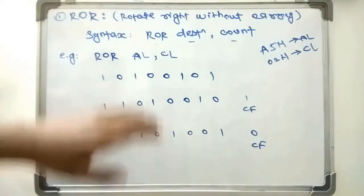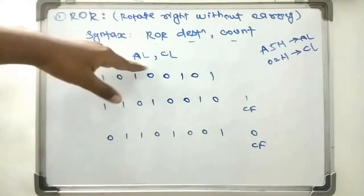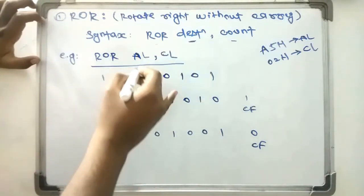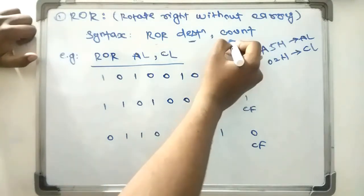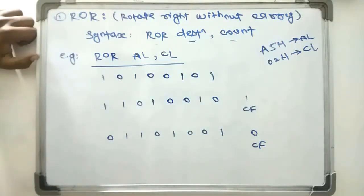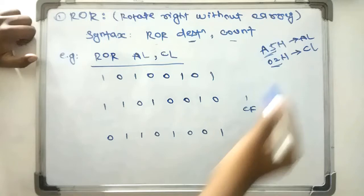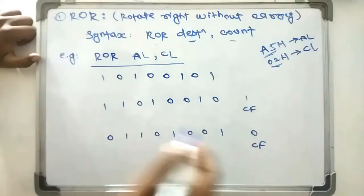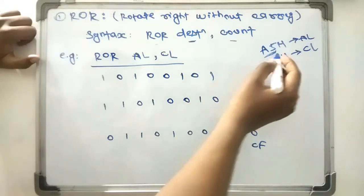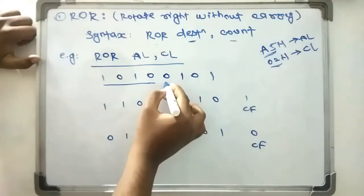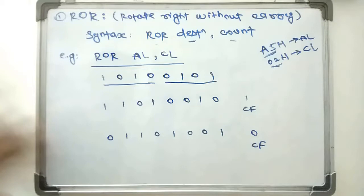Now let's explain an example. We have the instruction where the destination operand is AL and the count operand is CL. If we consider that AL content is A5 and CL is 02, CL equals 02 means the content will be rotated two times. We will explain in binary form. For A5, for A we write 1010, and for 5 we write 0101.